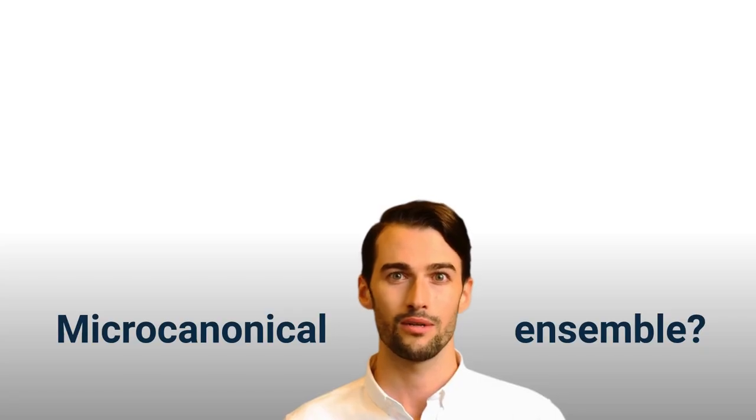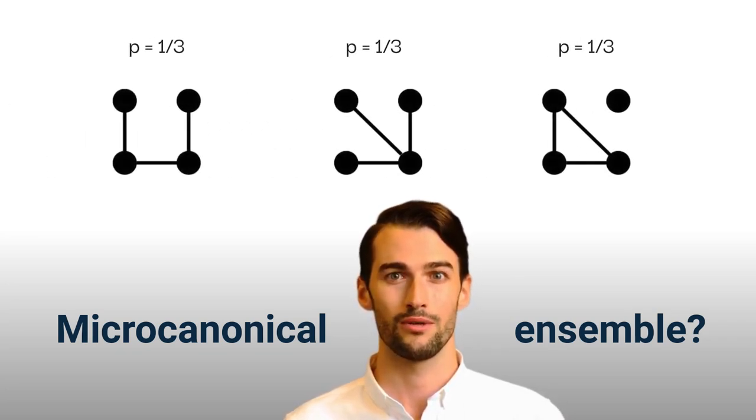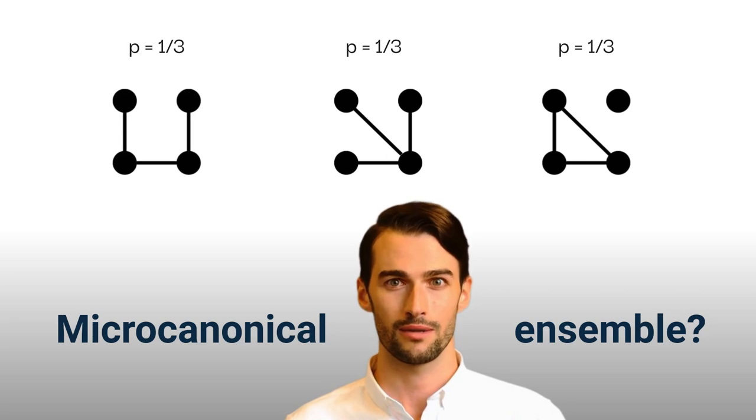What is a microcanonical graph ensemble? Let's first consider a simple example. Here we have three graphs. Suppose that each of them appears uniformly at random. This is a microcanonical random graph model. The set of graphs constitutes a random graph ensemble.